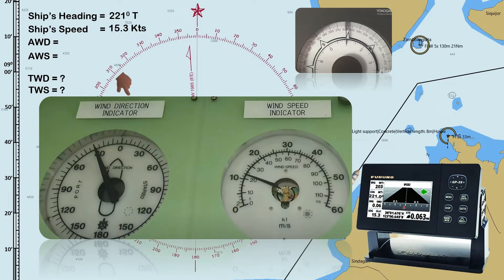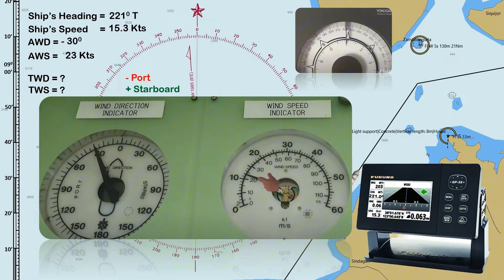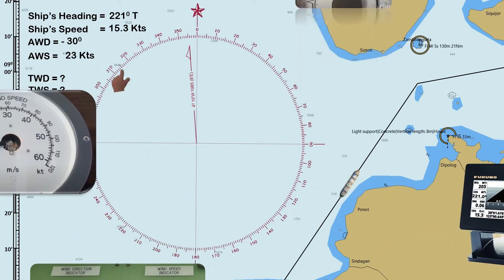We will take the apparent wind direction and speed from the wind indicator. The indicator shows that the apparent wind direction is 30 degrees to port. Always remember that if the apparent wind is port, the sign is negative, and for starboard it is positive. The apparent wind speed is 23 knots. Be familiar with the wind indicator you have on board. We now have the necessary information needed.